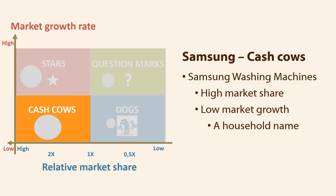An example of a cash cow is Samsung Washing Machines. Samsung washing machines have a good market share in a stable market. They have become a household name and stand for quality and trust, so they don't have to advertise a lot to hold this position. However, they must seek to adapt their washing machines to new market innovations such as energy saving and other new features.